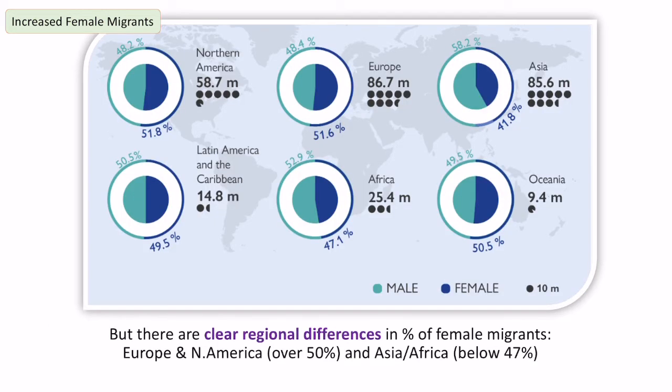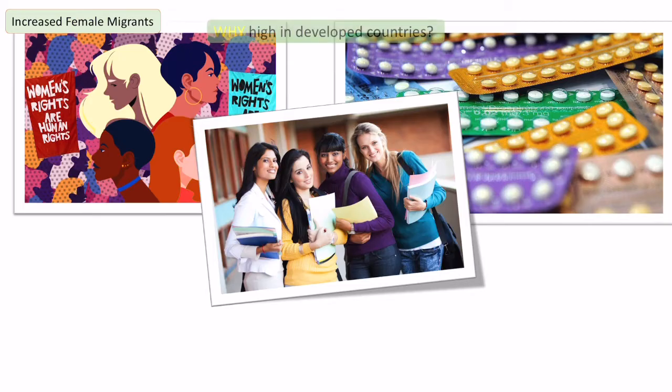However, this isn't uniform across the whole of the globe. There are clear regional differences. From the diagram, we can see that in Europe and North America you get a lot more women migrating than in Asia and Africa. There are differences in the benefits that those women might have compared to women in other parts of the world.